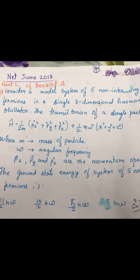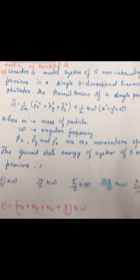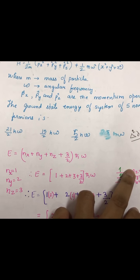So we will arrange these five fermions in energy level of Nx, Ny and Nz.